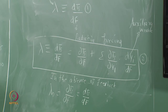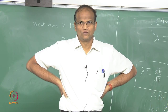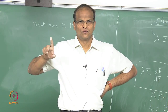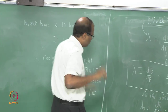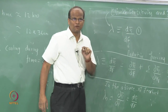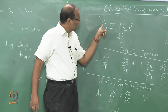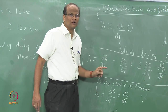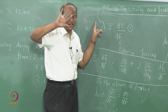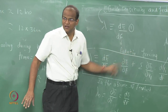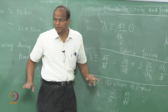In the absence of feedback, lambda naught is just the first term. In the next class, we will take the ratio of lambda by lambda naught — the sensitivity with many auxiliary variables present, divided by lambda naught which is the baseline when no feedback is present.